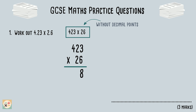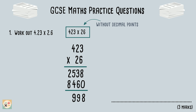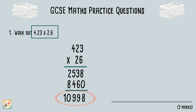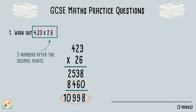Make sure you write down all your workings out, even if you can perform the calculation in your head. Now that we have the answer to the question without decimal points, all we have to do is add the decimal point into the correct place. Let's look at the original question. We need to count the total numbers that are after the decimal point, as our answer needs to match this. Here we have three numbers in total after the decimal points.